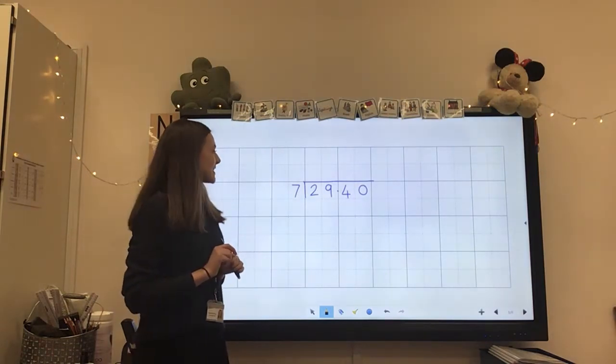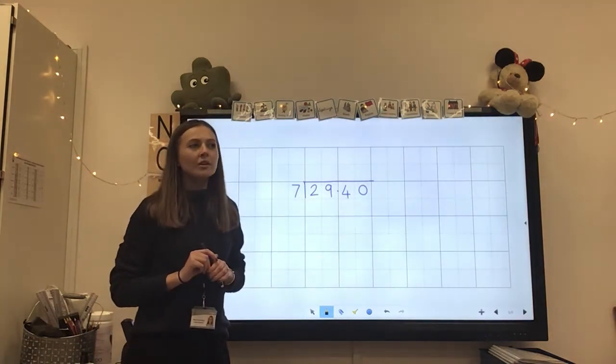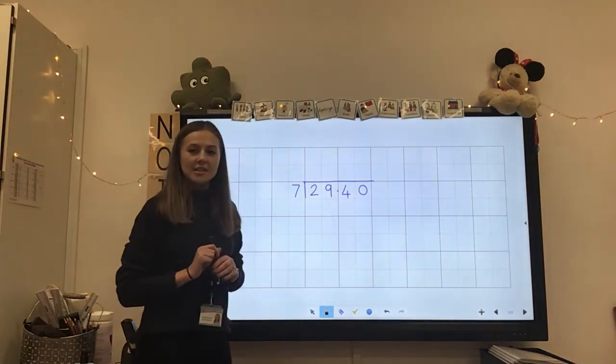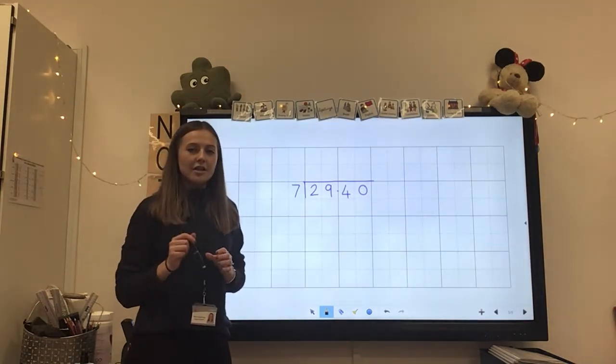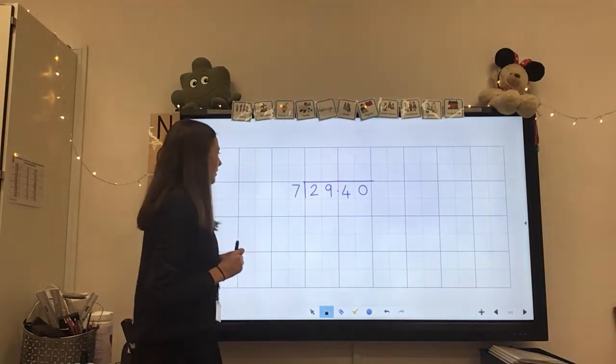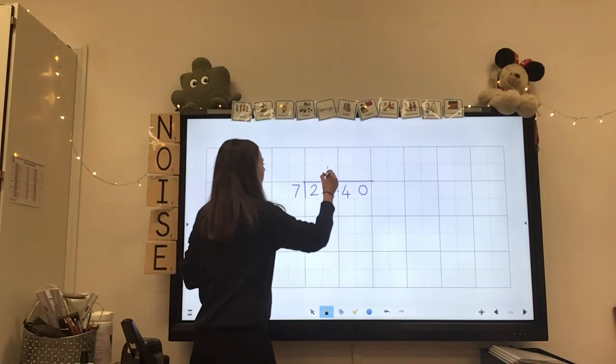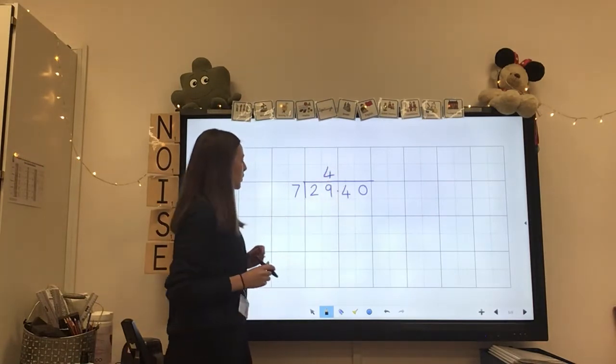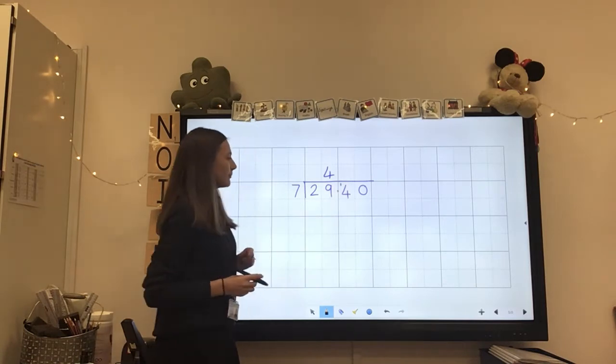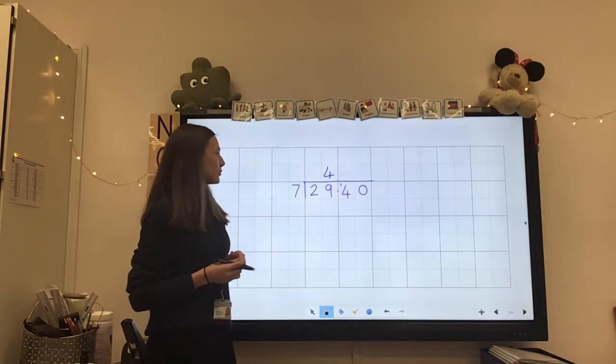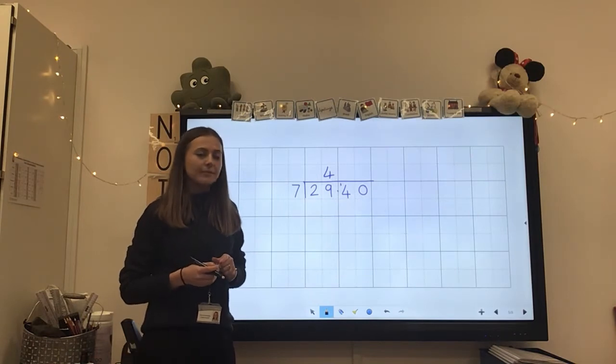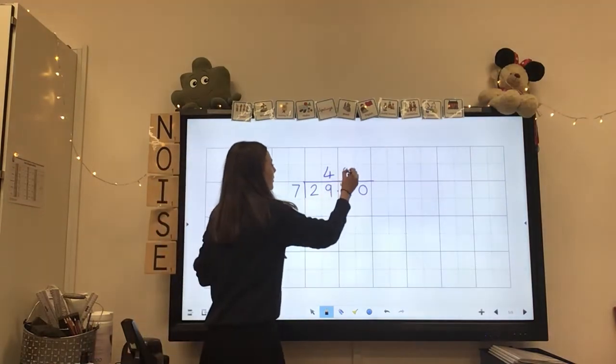So how many sevens go into two? We can't do that, can we? Okay, so how many sevens go into 29? Now using my times table knowledge, I know that seven times four is 28. Okay, so I can put a four up here, but that means I've got one left over. So I carry my one over with my four, so I now have 14. So I also know that seven times two is 14. So I can put a two up here.